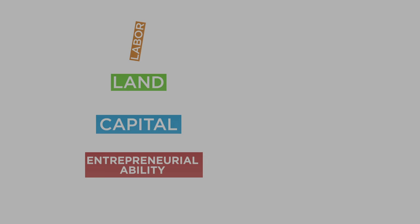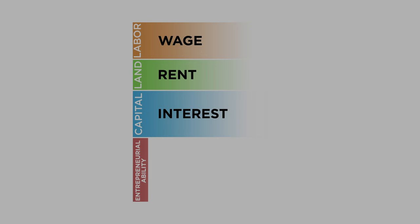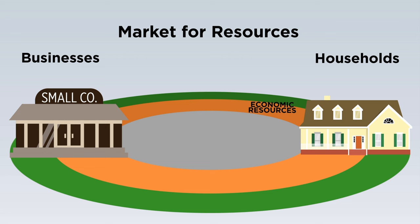In exchange for their resources, households earn income. Each resource has its own income category: households receive wages for their labor, rent for use of their land, interest for use of their capital, and profit for their entrepreneurial ability. For working at the diner, your income would be paid in the form of a paycheck at the end of the month. In the market for resources, households sell resources and businesses buy resources — the resources flow one way, and money flows the other.